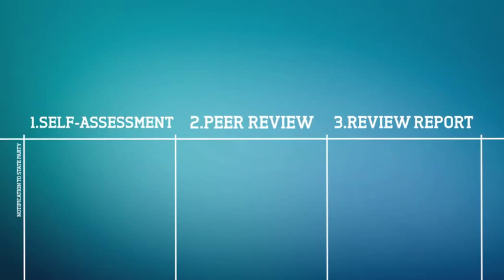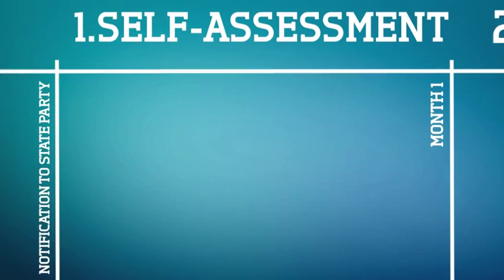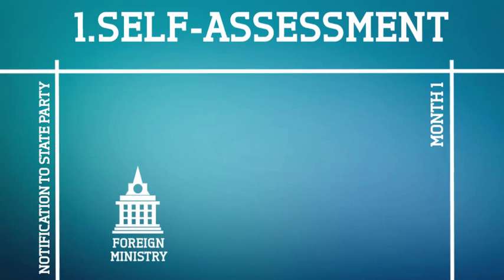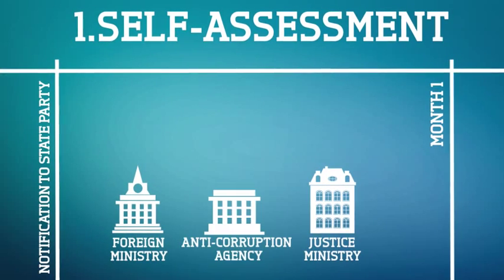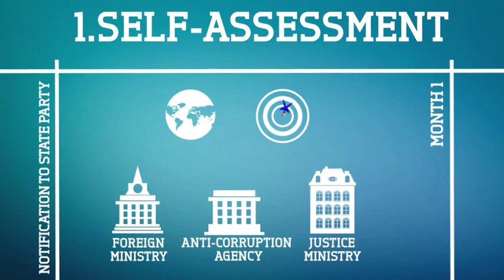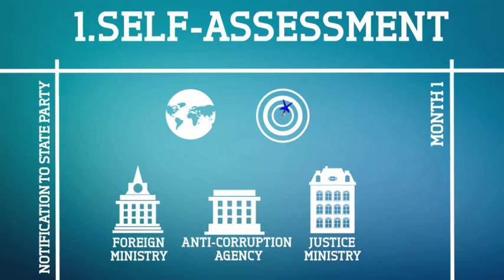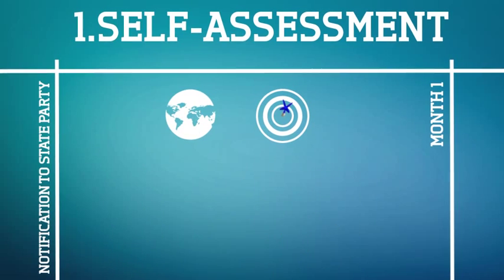At the start, generally among officials of the foreign ministry, the justice ministry, or the anti-corruption agency, the country reviewed appoints a focal point to coordinate the review process in-country and to communicate with the secretariat.